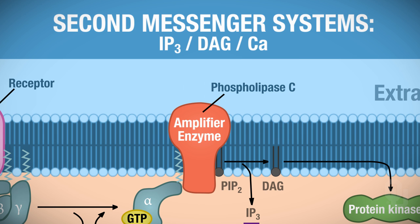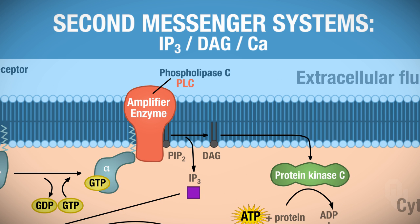Phospholipase C, which can be abbreviated PLC, once activated, will convert PIP2 to IP3. Now PIP2 is a phospholipid. Once it gets converted to IP3, IP3 is then released into the cytoplasm.